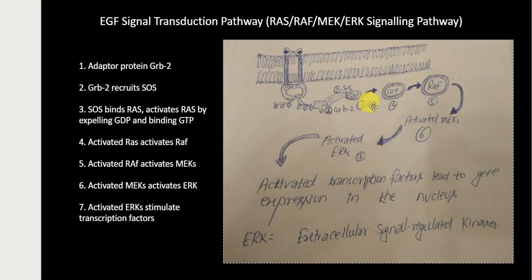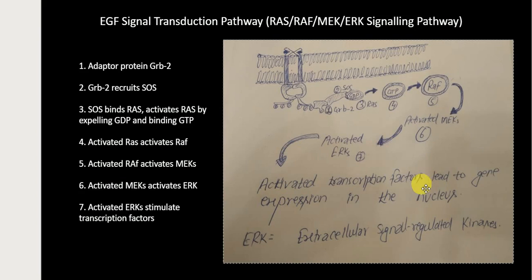When RAS is activated, it moves on to activate another protein called RAF. Activated RAF then activates another protein kinase called MEK, and activated MEK activates another protein kinase called ERK — ERK stands for Extracellular Signal Regulated Kinases. These ERKs enter the nucleus and activate transcription factors, leading to gene expression in the nucleus. Gene expression leads to protein synthesis, which ultimately leads to enlargement of the cytoskeleton and cell growth.